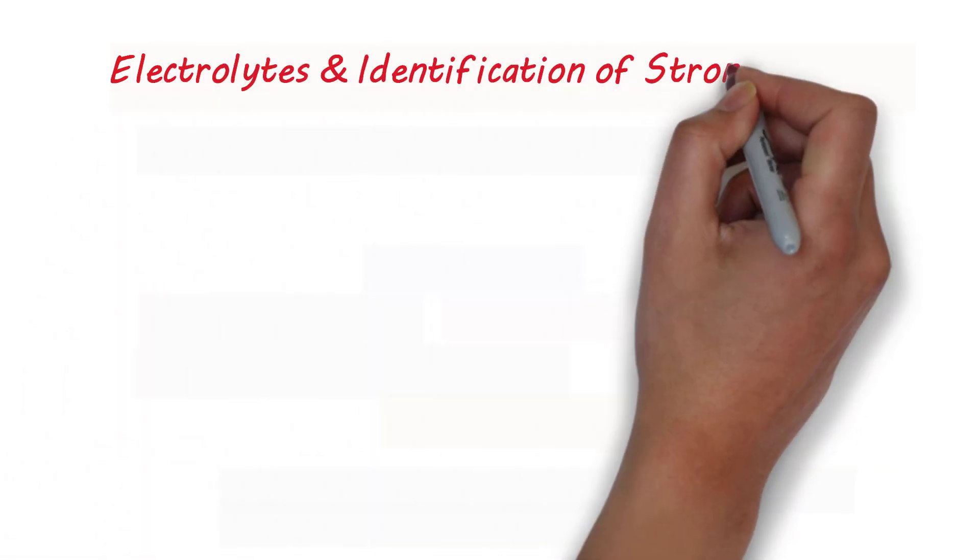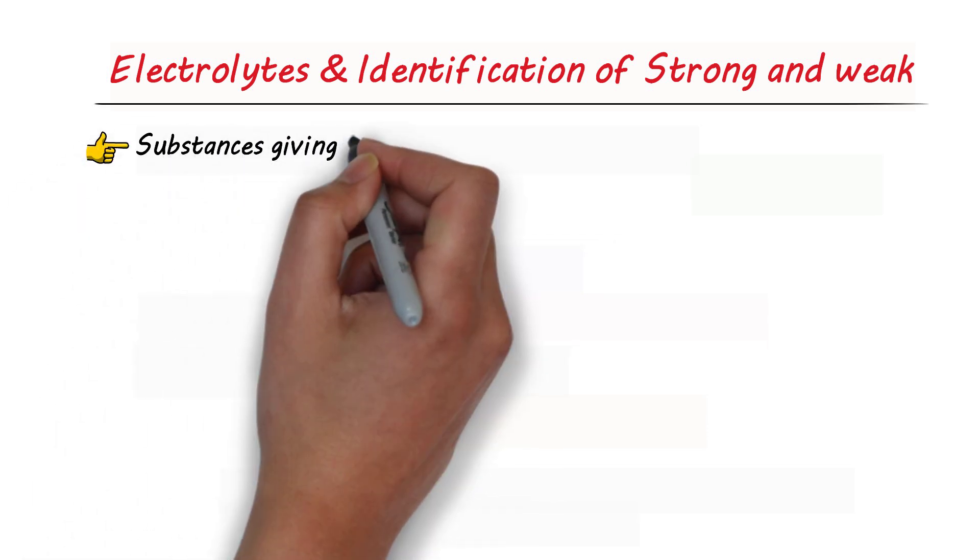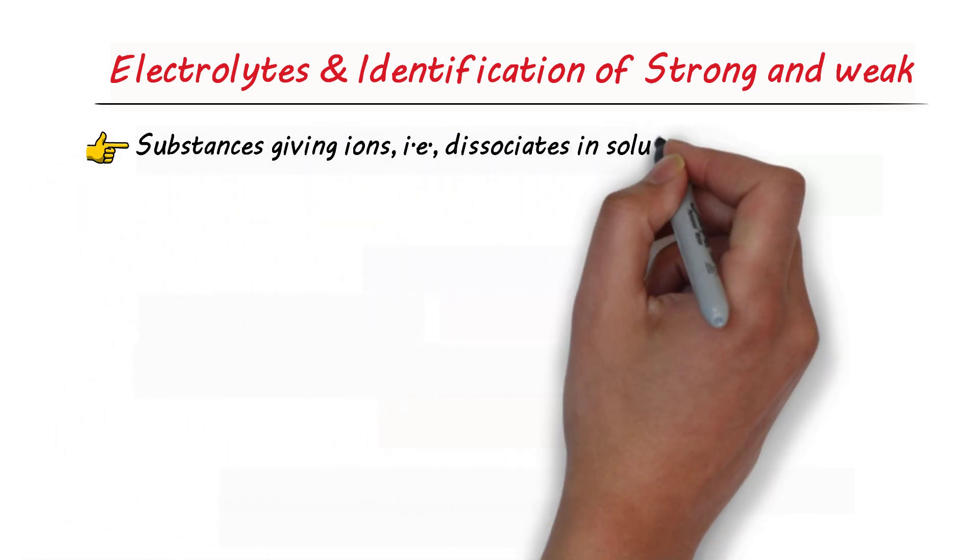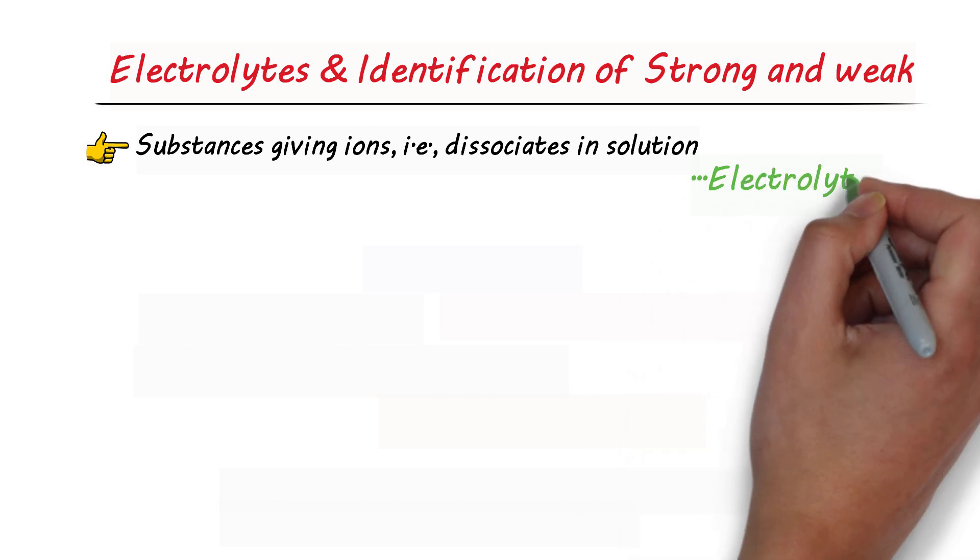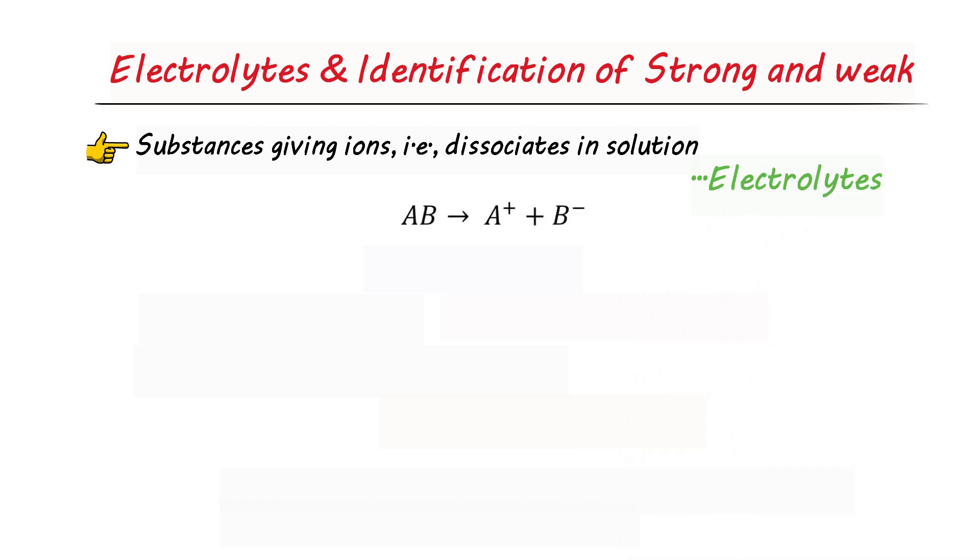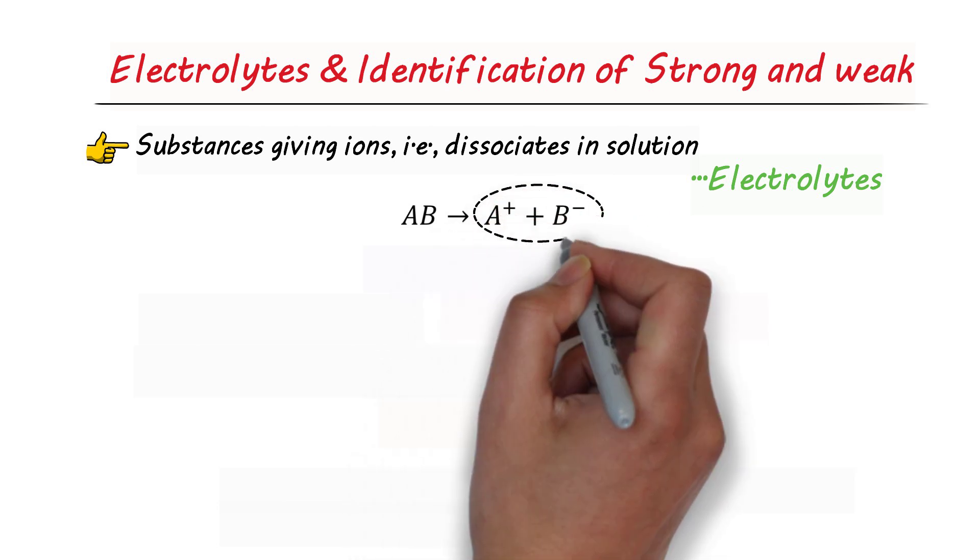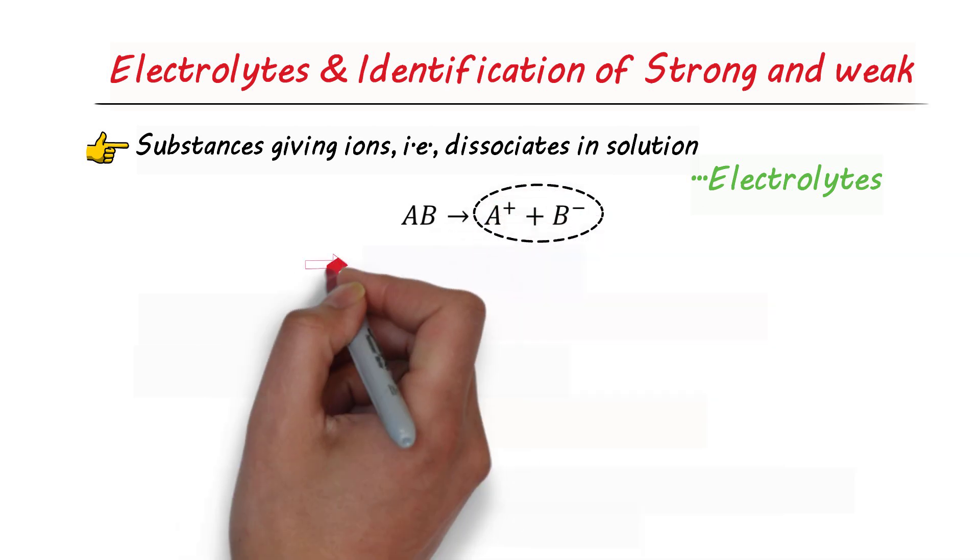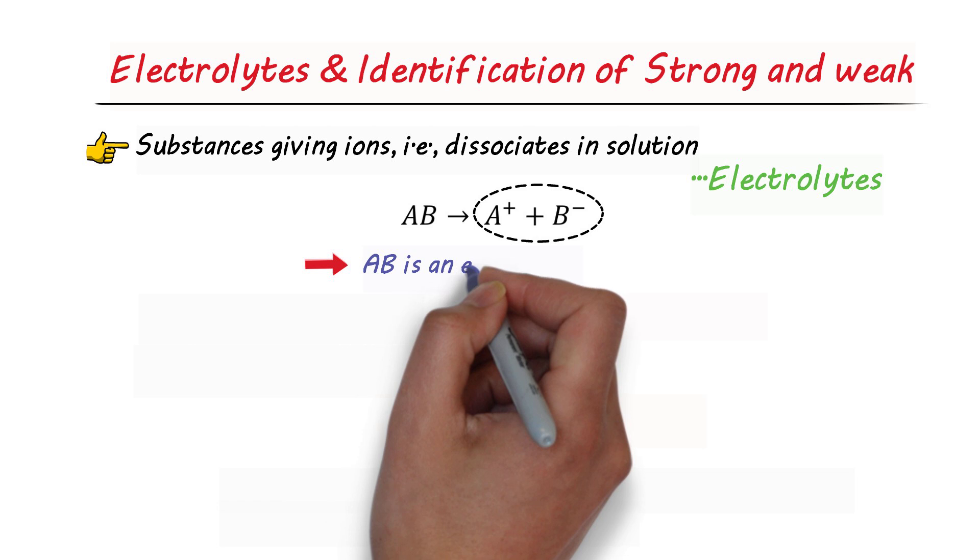Electrolytes and the identification of strong and weak electrolytes. Substances giving ions, that is dissociates in solution, we call them electrolytes. For instance, AB upon dissociation gives A plus and B minus. As it gives ions, so AB is an electrolyte.